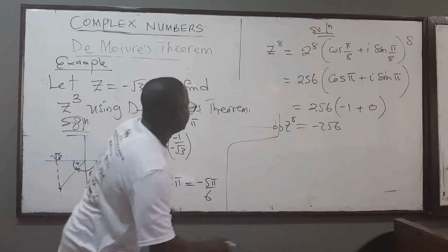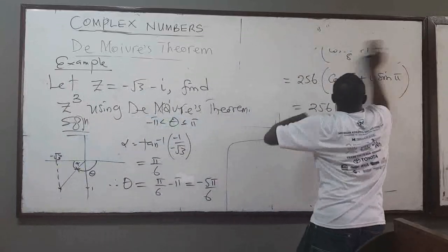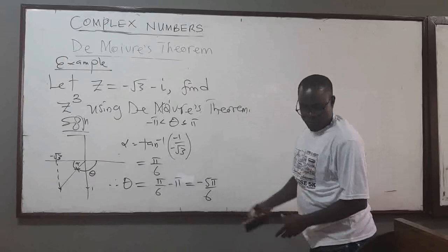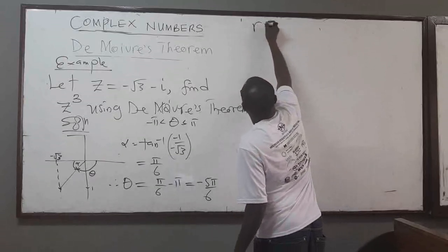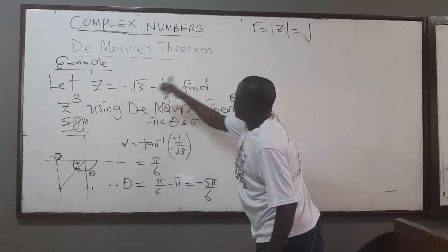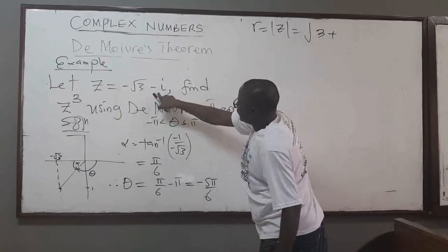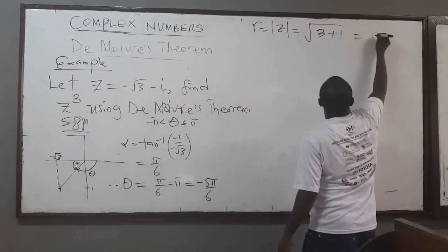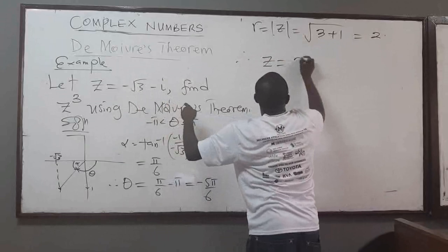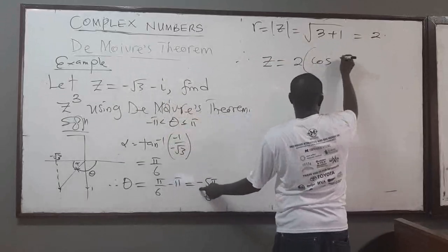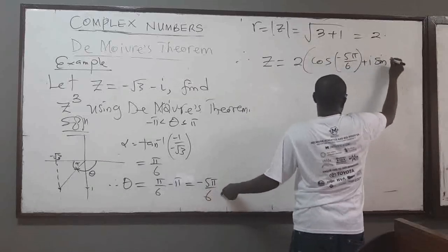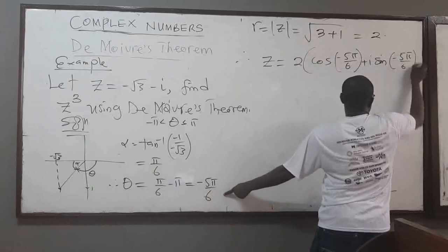We can find the modulus: R = √(x² + y²) = √((-√3)² + (-1)²) = √(3 + 1) = √4 = 2. Therefore, I can write the complex number in the form 2·(cos(-5π/6) + i·sin(-5π/6)).